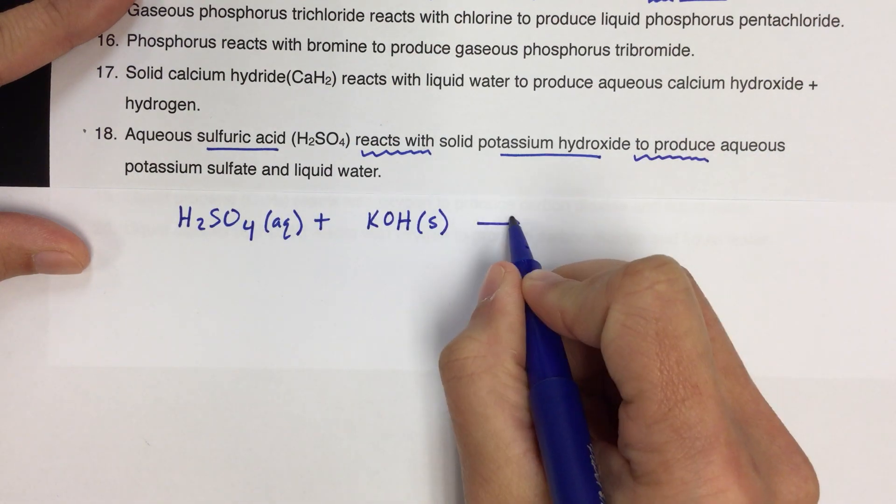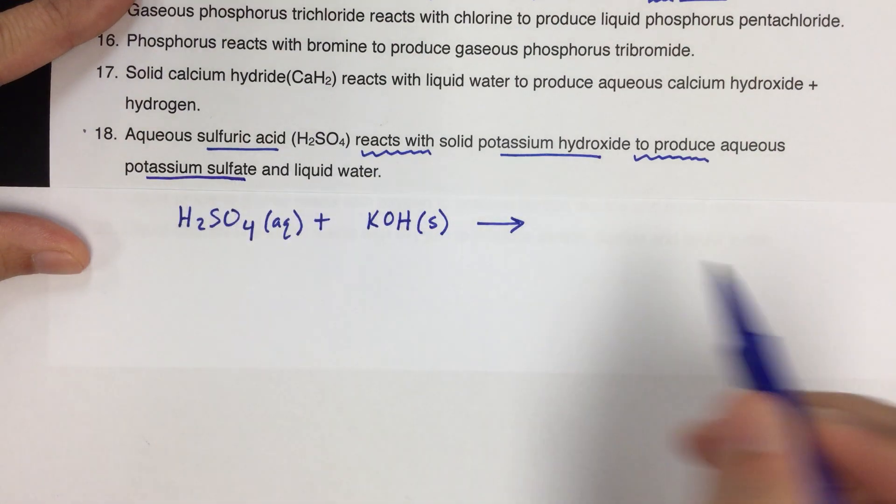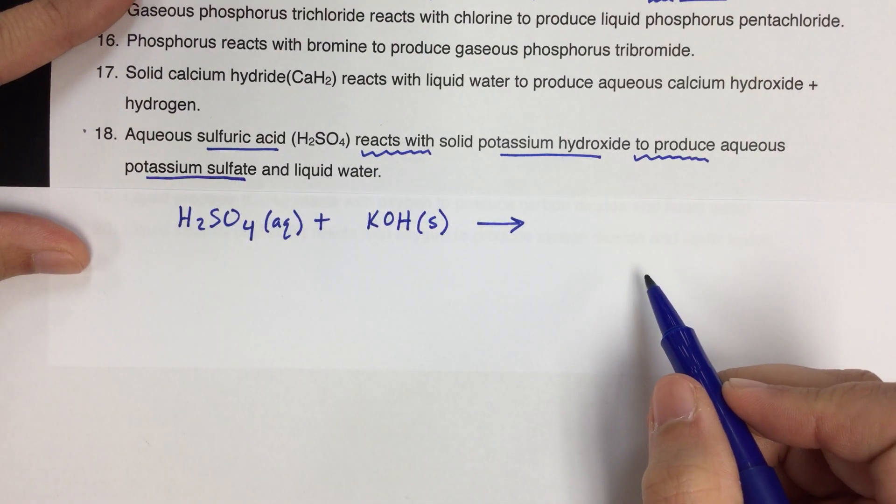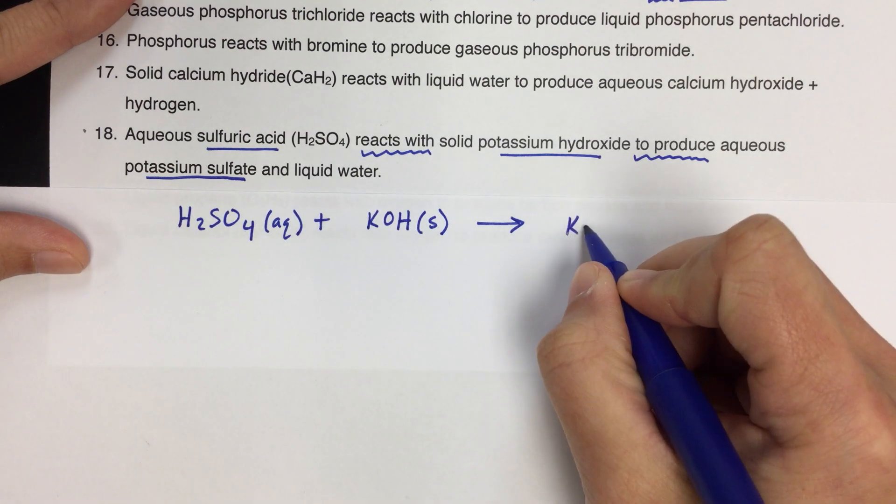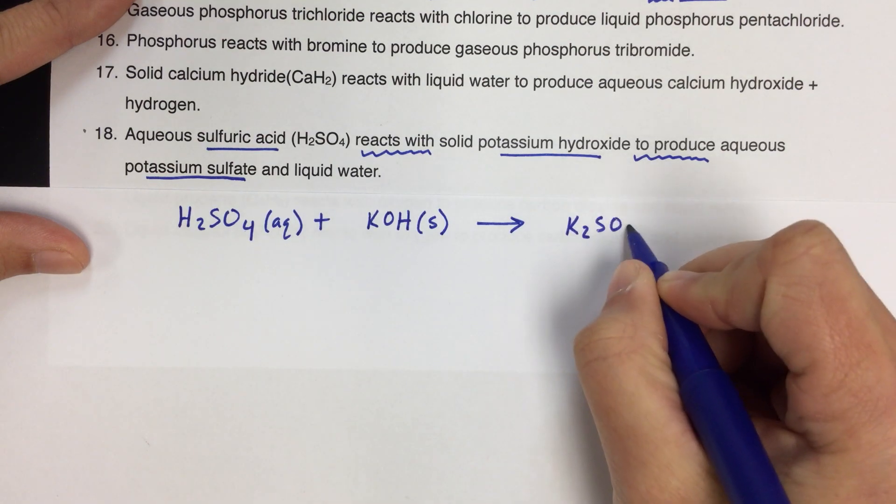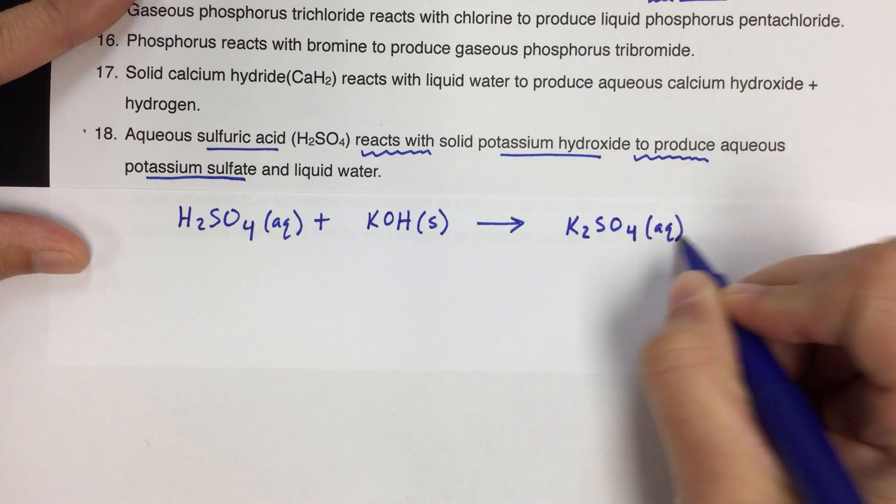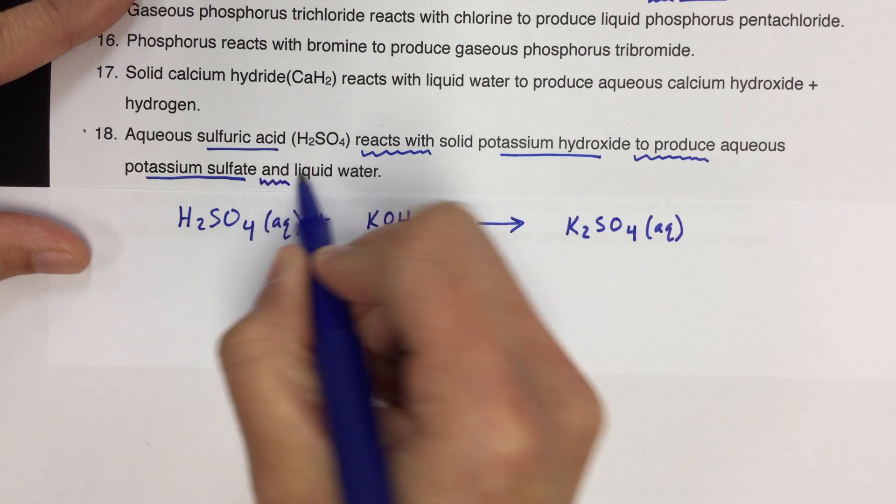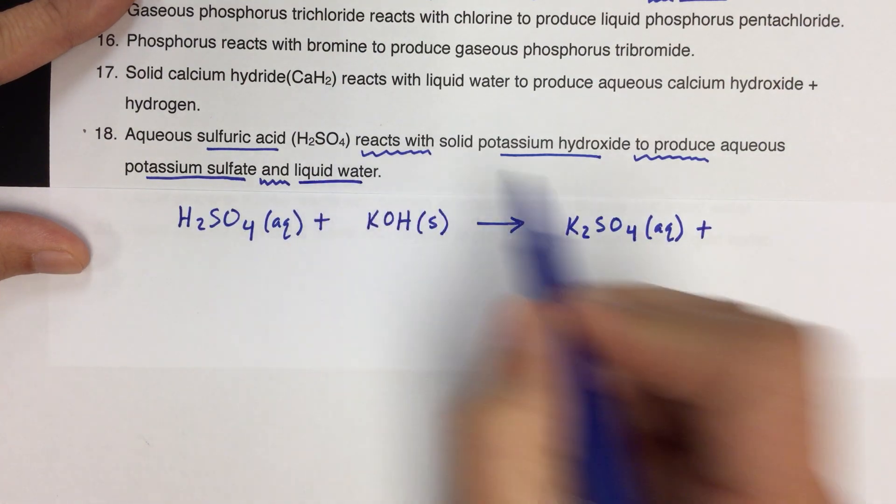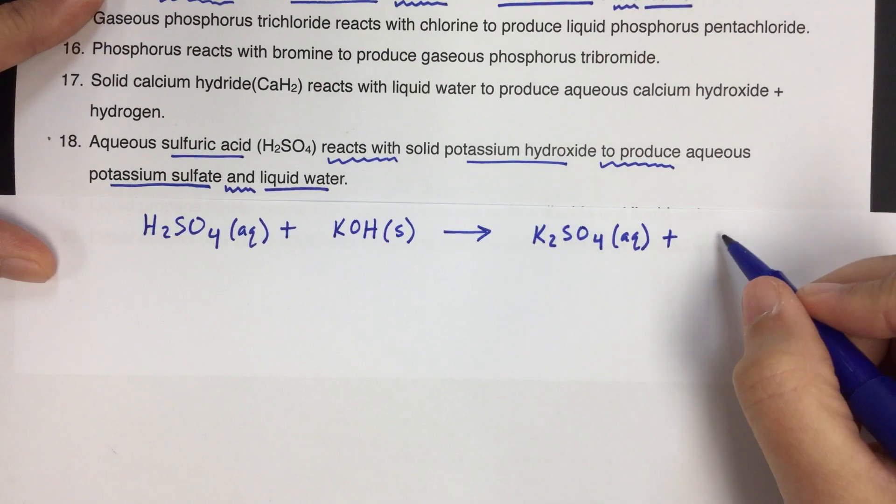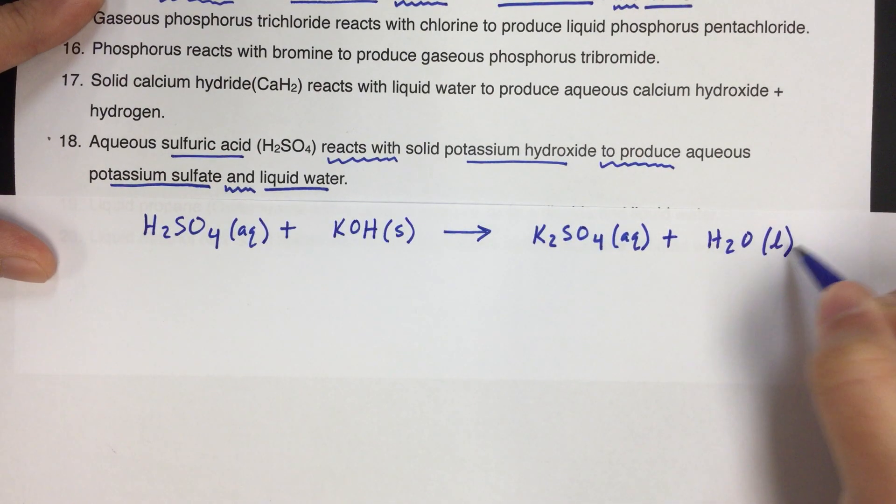'To produce,' arrow, aqueous potassium sulfate. So that's going to be K plus, SO4 2 minus. So I need two potassiums. And it says it's aqueous. And, plus sign. Liquid water. That's H2O, liquid.